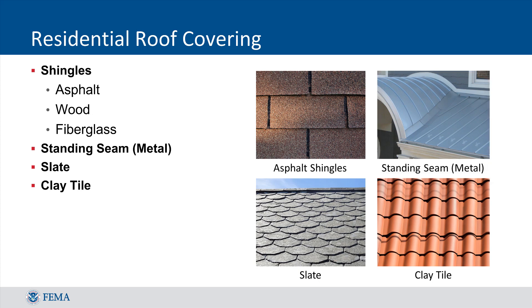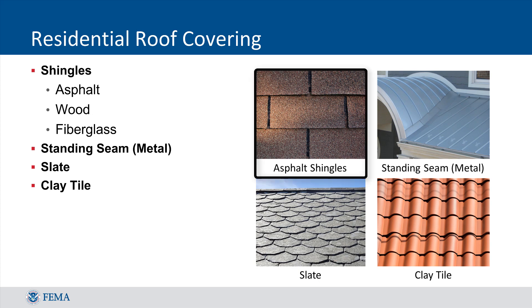Similarly, standing seam roofs have long lifespans and are made of metal panels that are crimped together. Standing seam roofs should not be confused with common sheet metal roof covering, which is not composed of interconnected crimped panels. These roofs are often made of corrugated sheet metal that has simply been laid down on top of the roof superstructure and nailed down or otherwise connected. For these types of roofs, standing seam should not be selected because the cost and style of these roofs is more akin to a shingle roof.